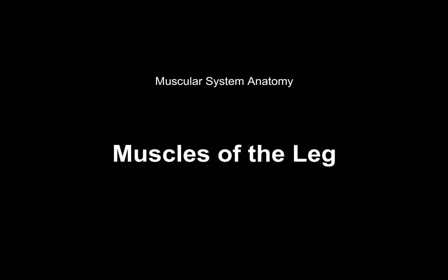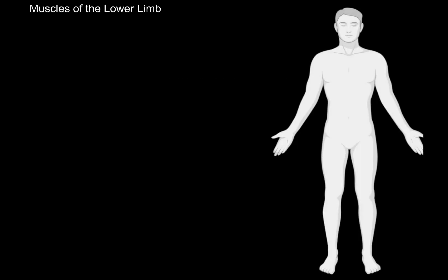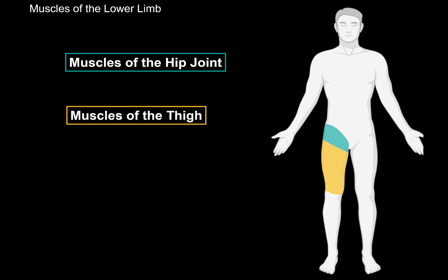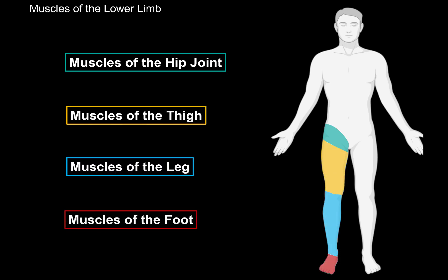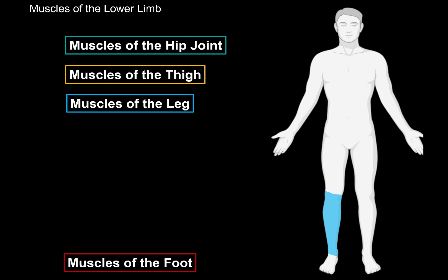What's up, Merte here, and in this video we will be covering the muscles of the leg. The muscles of the lower limb are divided into 4 parts according to their anatomical location: the muscles of the hip joints, the muscles of the thigh, muscles of the leg, and muscles of the foot. The muscles of the leg are what we are going to focus on in this video.